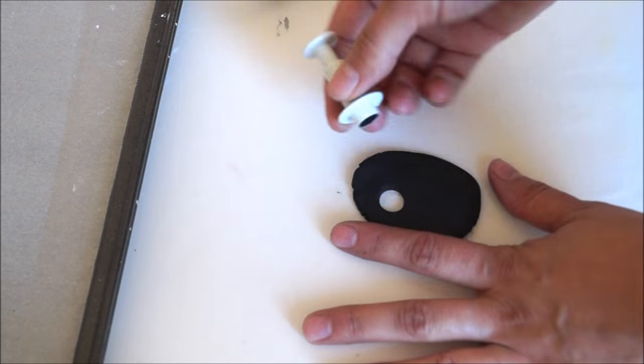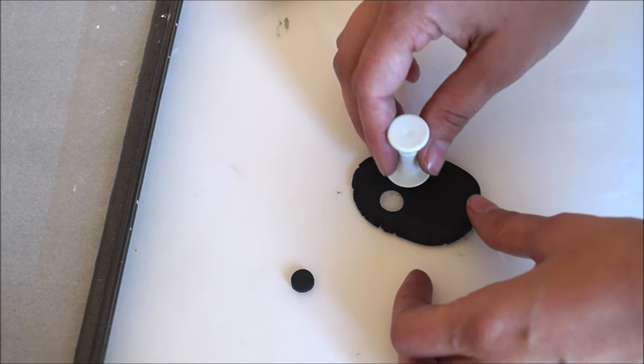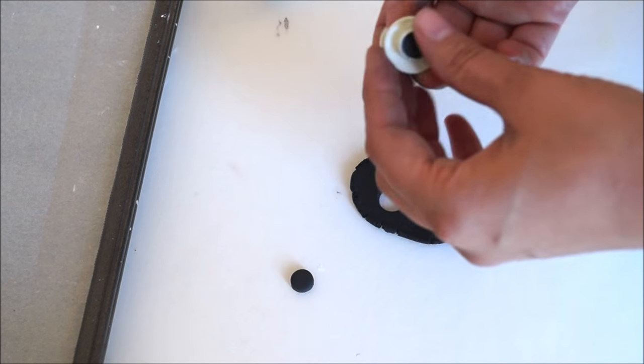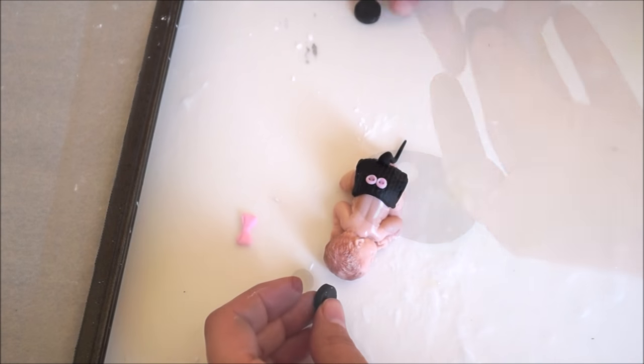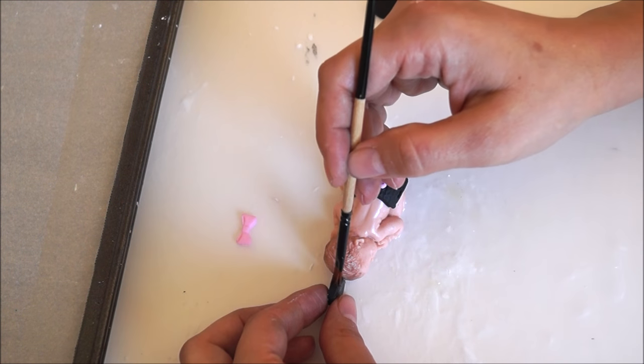Cut out two round shapes of black fondant using your smallest plunger. Brush a small amount of water at the top of the baby's head and glue both pieces together.